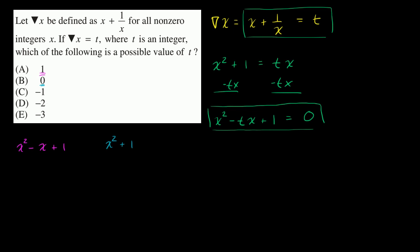If t is equal to negative one, then this thing becomes x squared negative negative one, so it's plus x plus one.